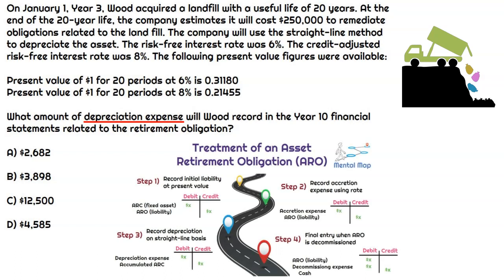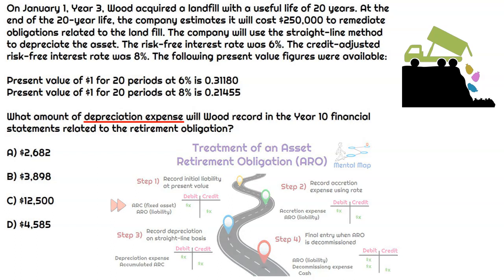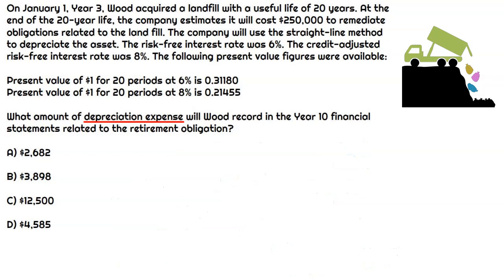If we look at our mental map, depreciation is step number three, and we can see that the journal entry would be a debit to depreciation expense and then a credit to accumulated depreciation related to that asset retirement cost. But to get that asset retirement cost, we're going to have to calculate what the initial journal entry would be to record that asset retirement obligation, because the debit is to that asset retirement cost. So we're going to have to perform steps one and three here. Once we have that asset retirement cost, we just take whatever that amount is and divide by 20 years because we're using the straight-line method.